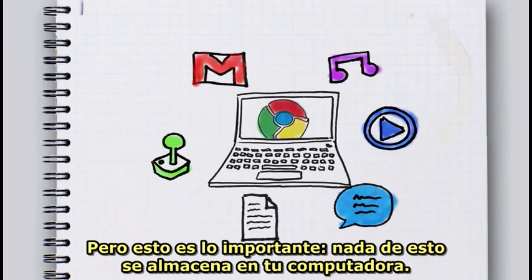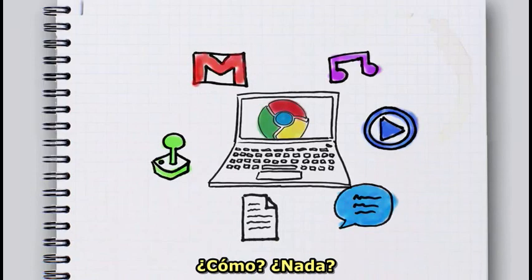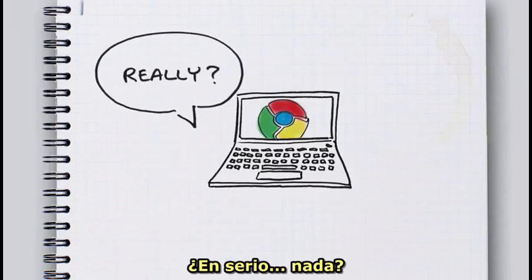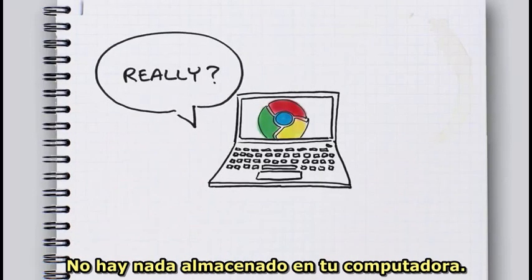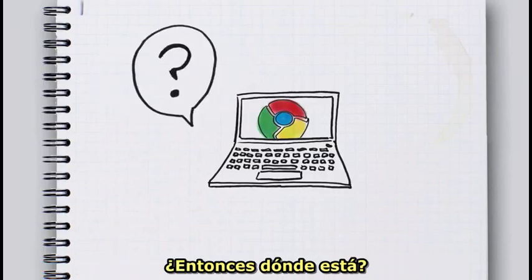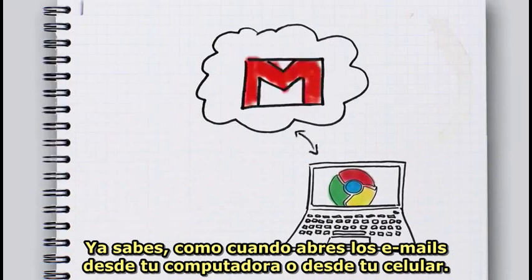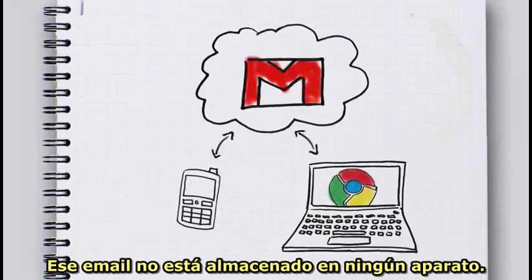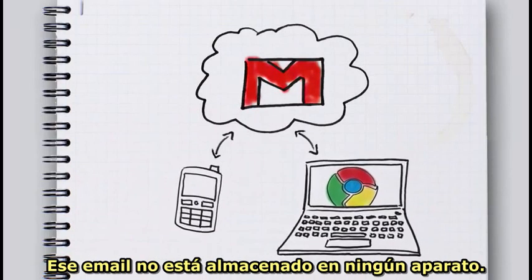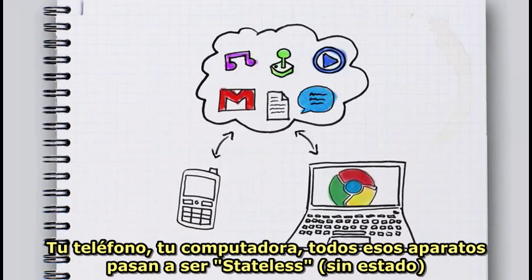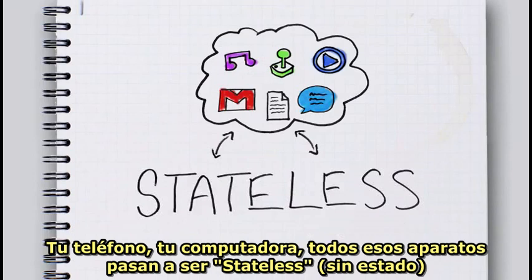But here's the thing: none of this is stored on your computer. None of it. It's on the internet. Like when you access your emails from your computer and your phone — the email isn't stored on either device. So if everything's stored on the internet, then your phone, your computer, all of these devices are what people call stateless.